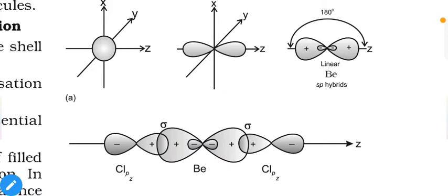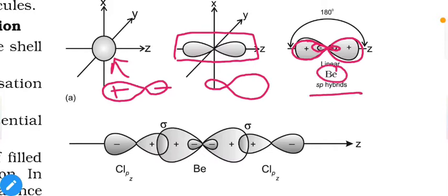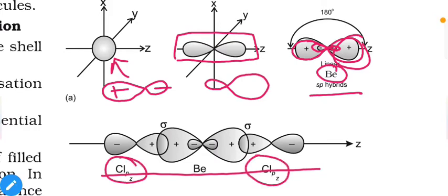As shown in the figure, the s orbital is spherical and the pz orbital has its dumbbell shape. After hybridization, the s orbital changes to have a larger positive lobe and smaller negative lobe; similarly the pz orbital also takes on a larger positive lobe and smaller negative lobe — both becoming sp hybridized orbitals of Be. These positive lobes then overlap with the pz orbitals of the two chlorine atoms to form two sigma Be-Cl bonds.